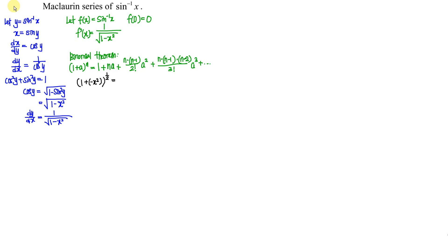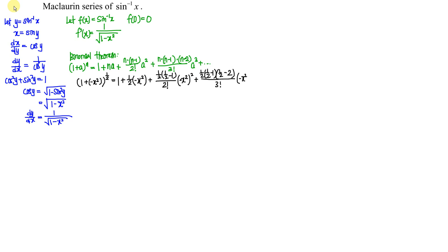So we have 1 plus (1 over 2) times (negative x squared), plus (1 over 2) times (1 over 2 minus 1) over 2 factorial times (negative x squared) squared, plus the term with (1 over 3 factorial) times (negative x squared) to the power of 3, and so on. Let's simplify.